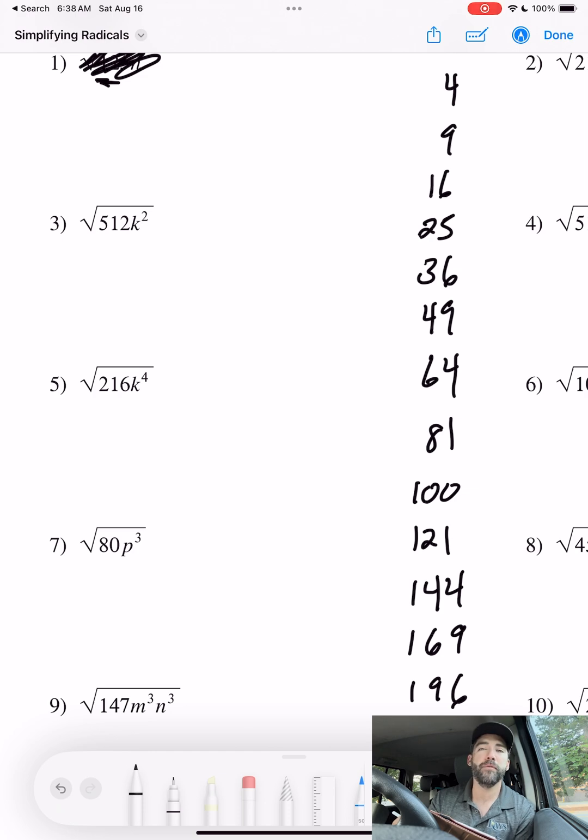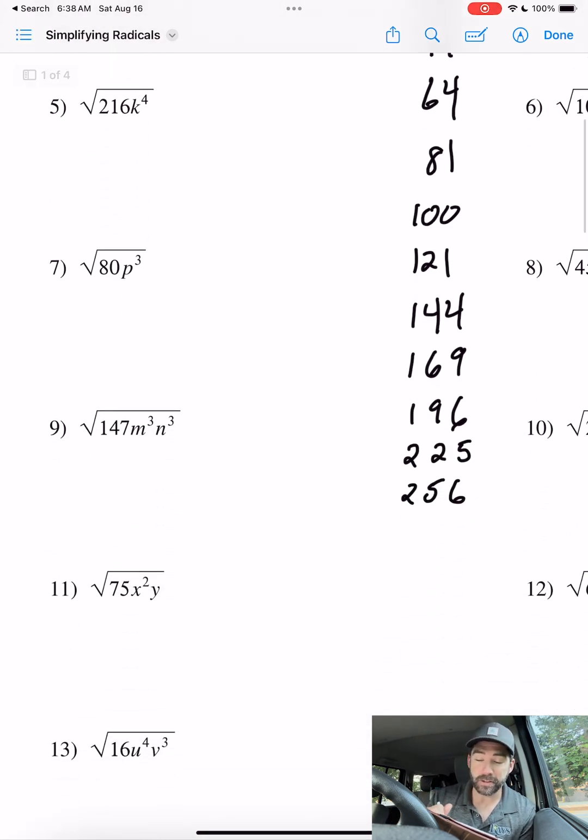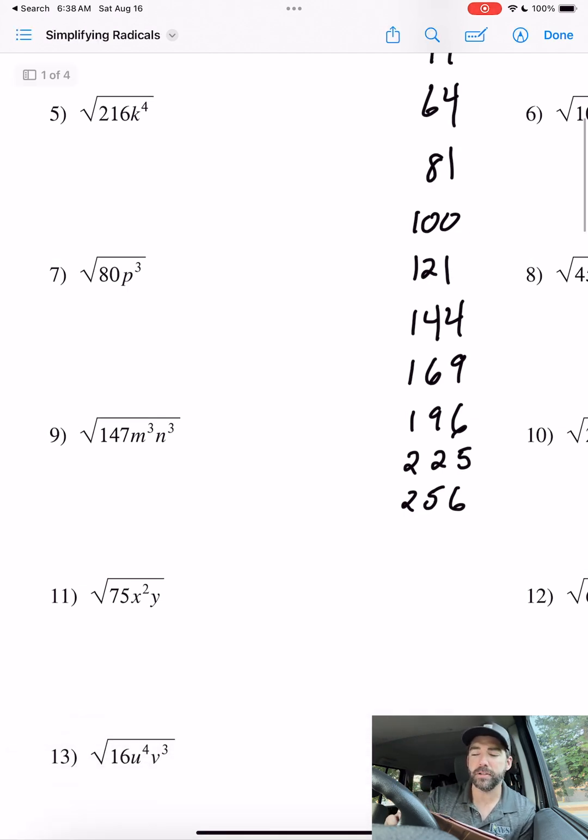100, 121, 144, 169 (that's 13), 196, 225 (225 is 15). Now if you know any more, there's another one: 256, that is 16. How do you find these answers?